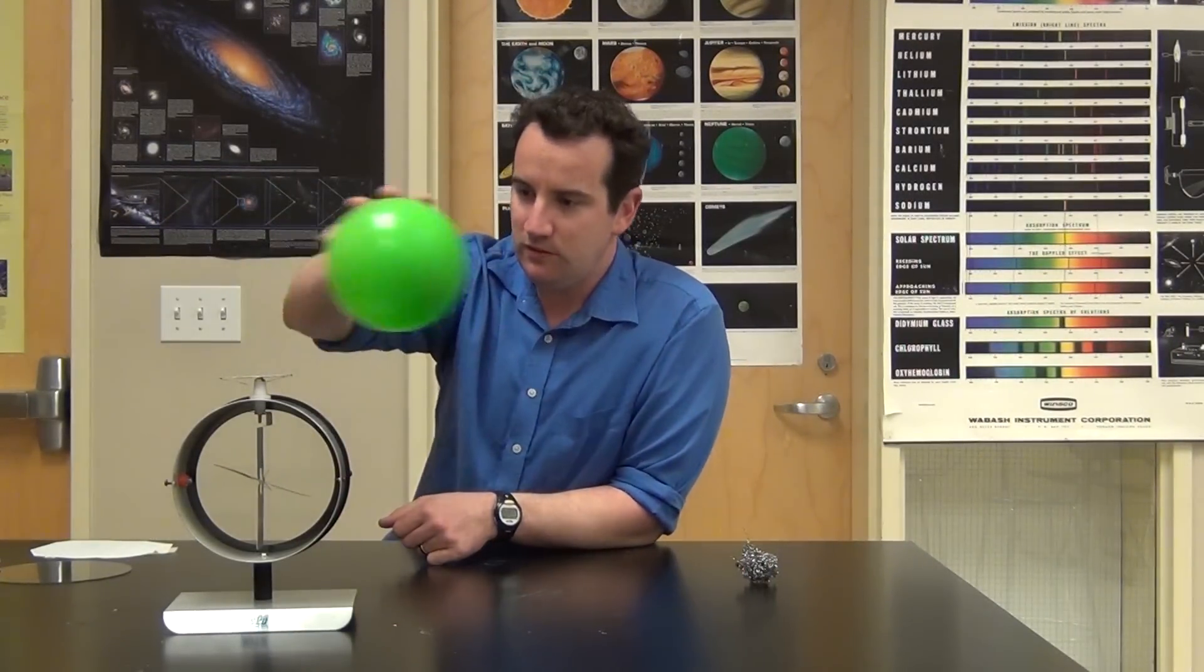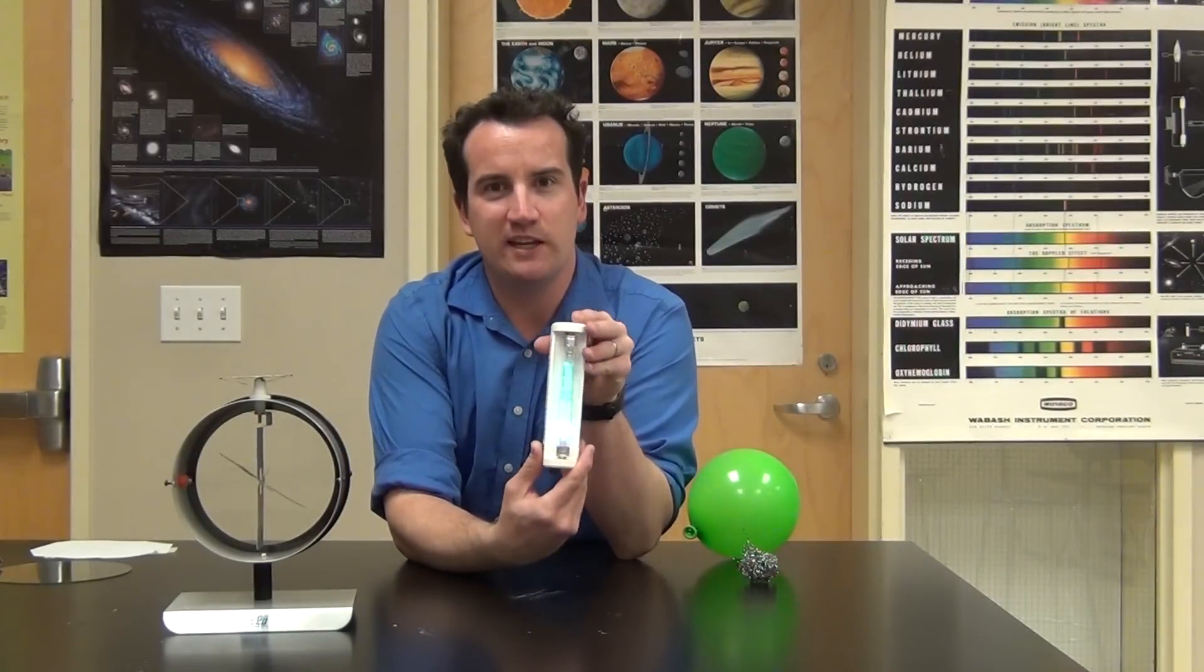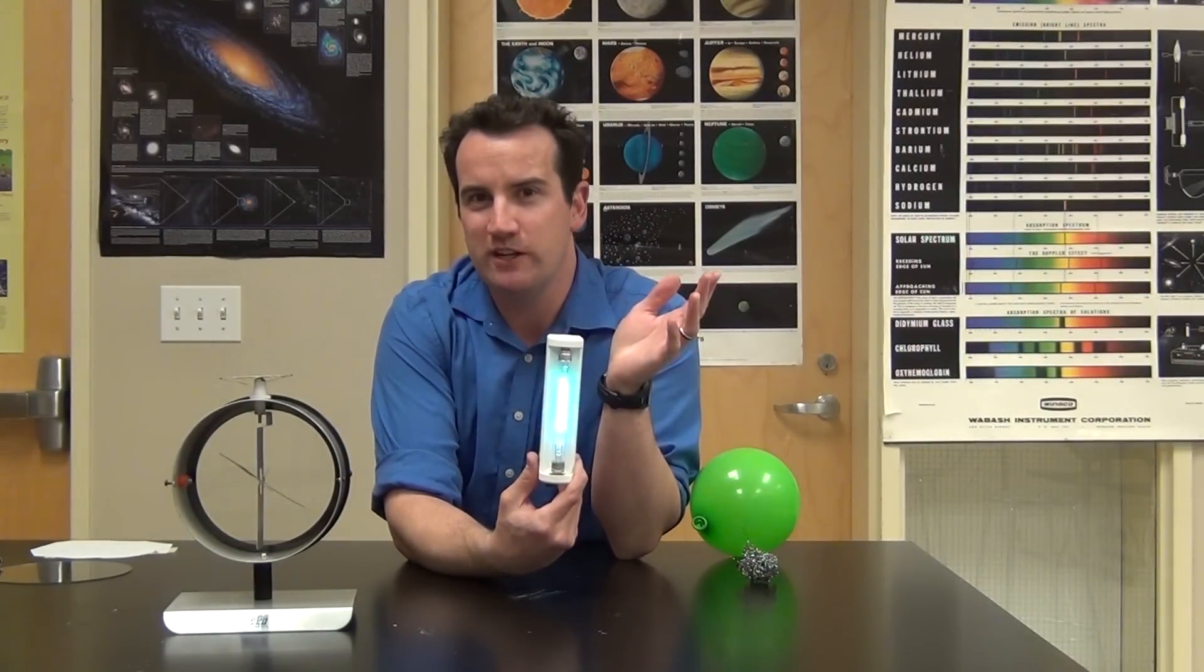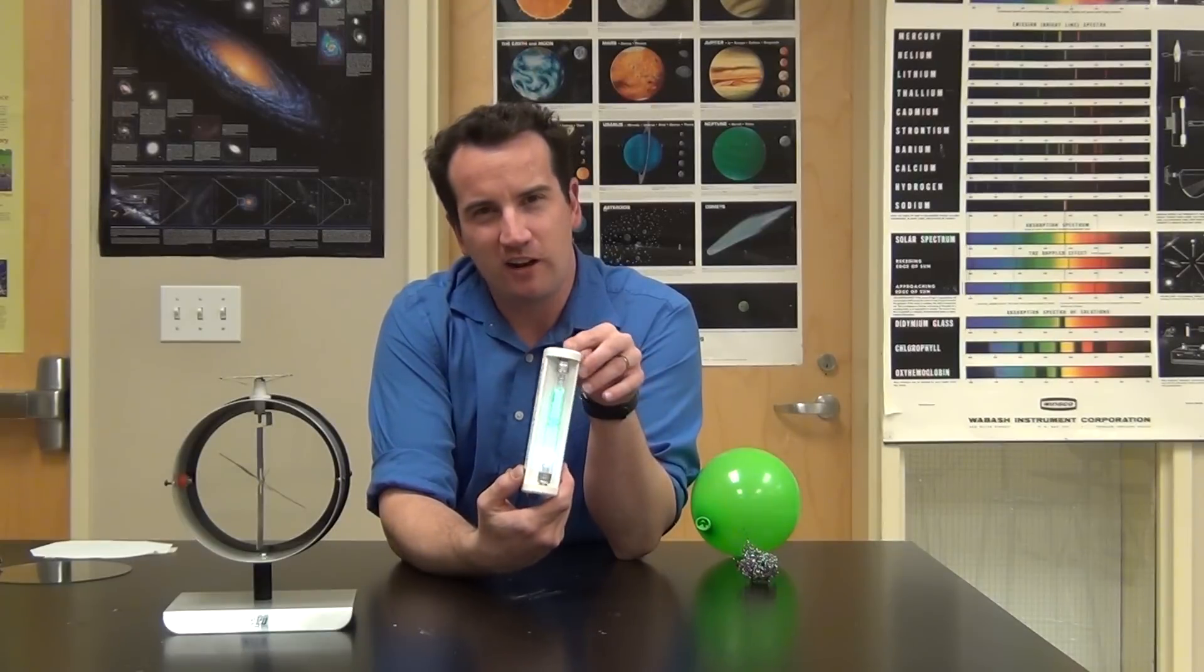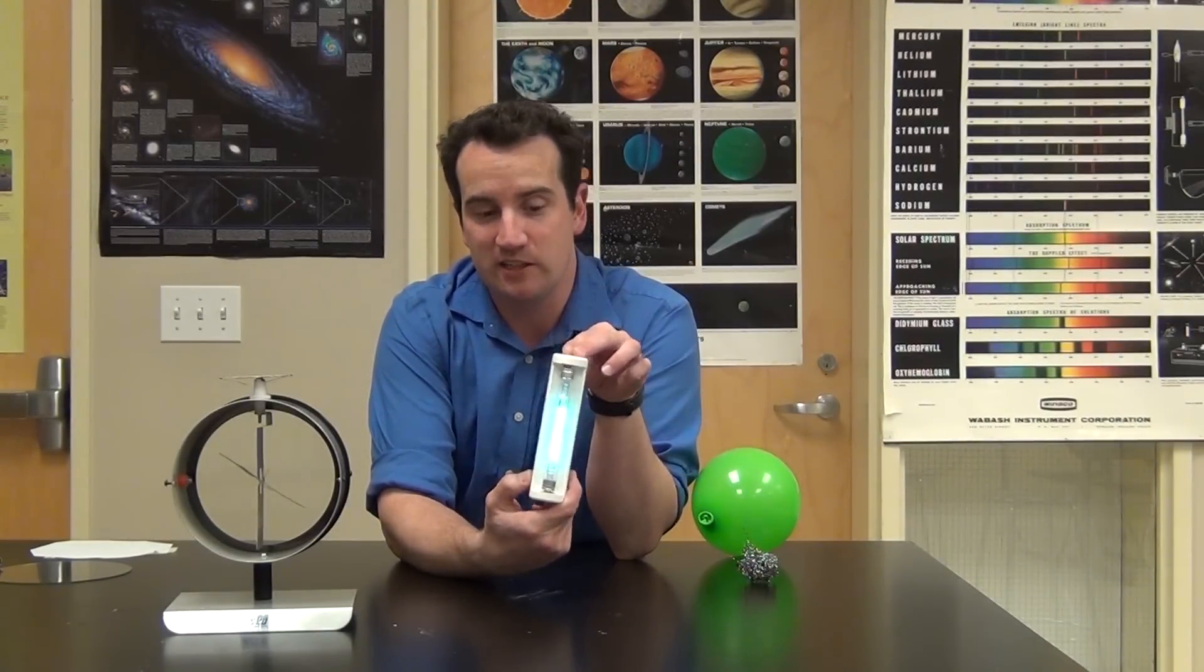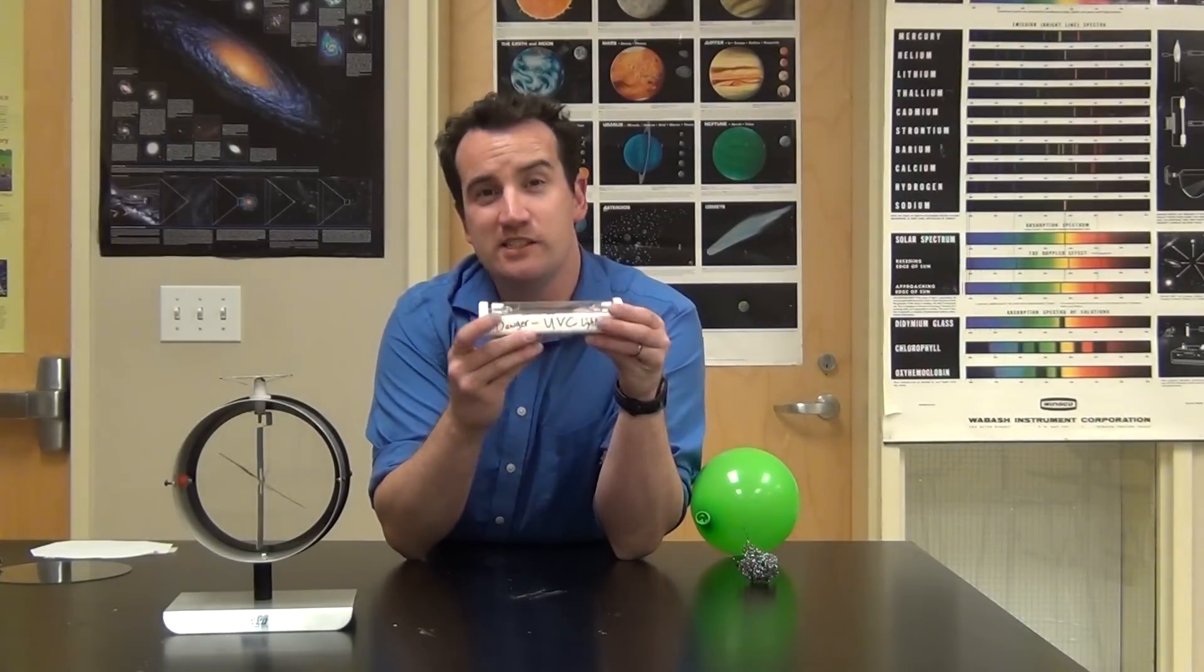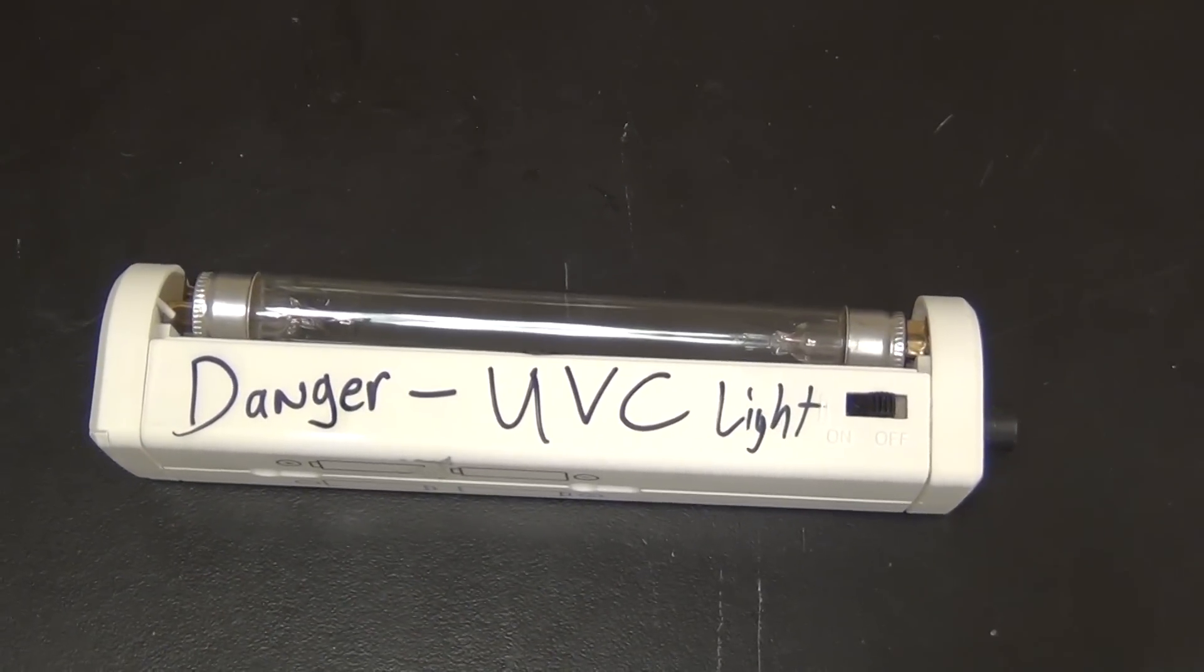For example, ultraviolet light. Now I have an ultraviolet lamp right here, which I'll point at the camera and turn on, but I would never do this with your regular eyes, because your regular eyes are going to be damaged easily by ultraviolet light. This is ultraviolet C, and that is the shortest wavelength of ultraviolet light that we usually use.